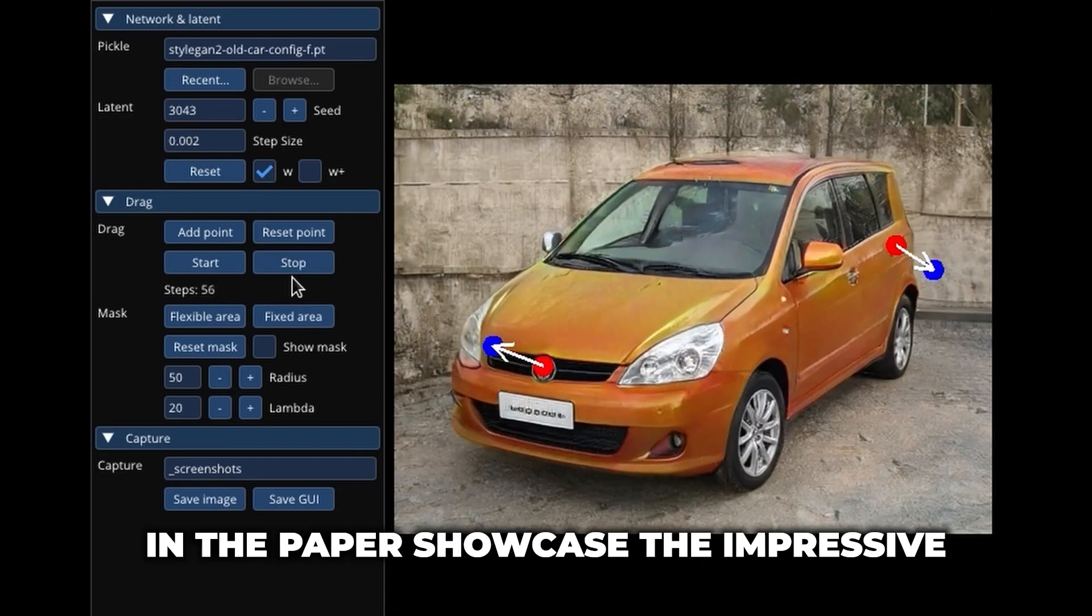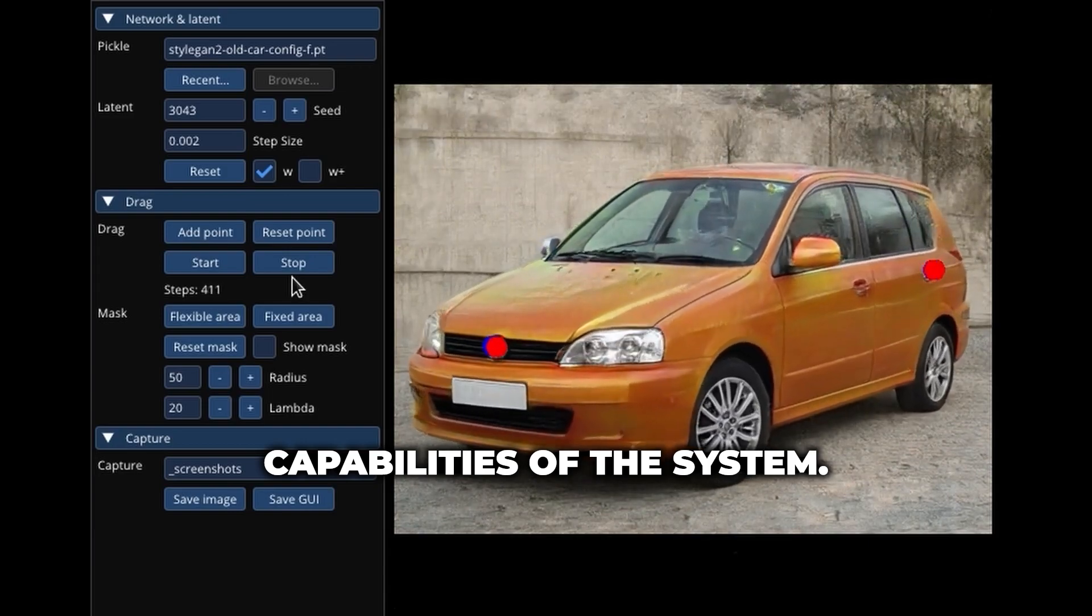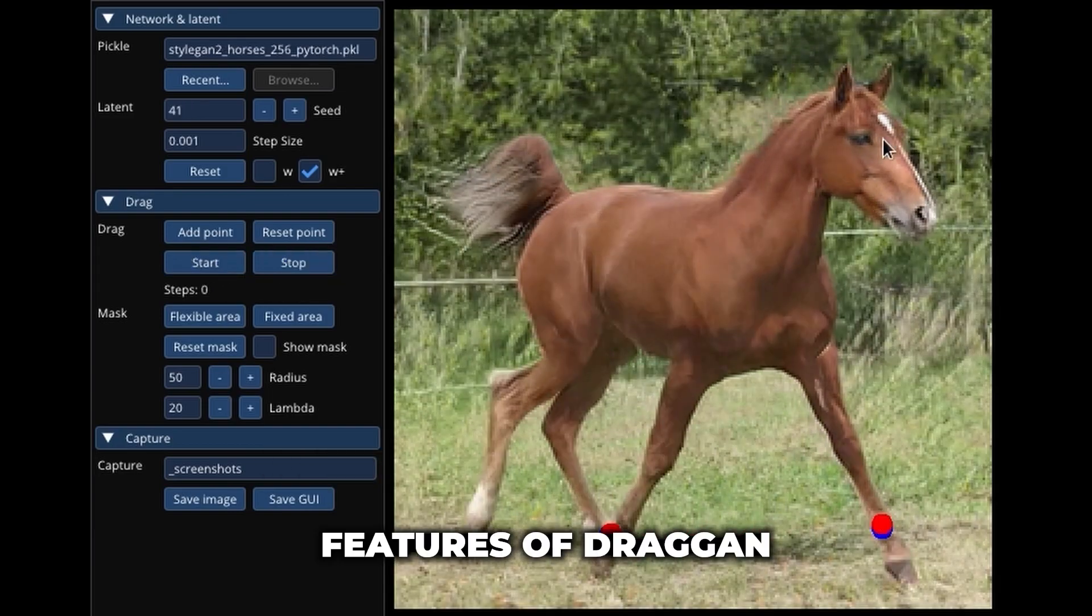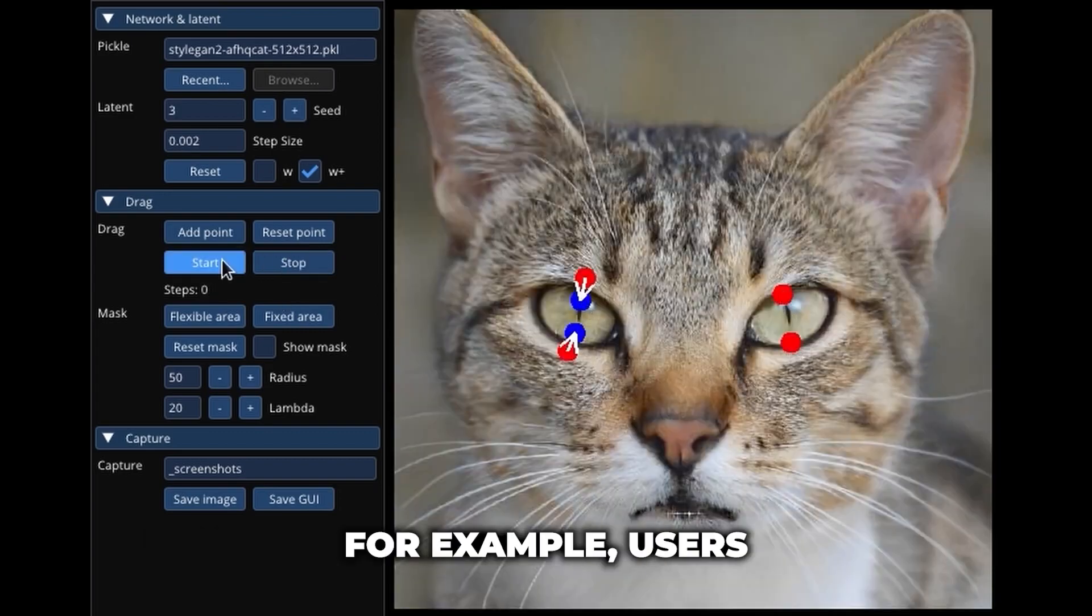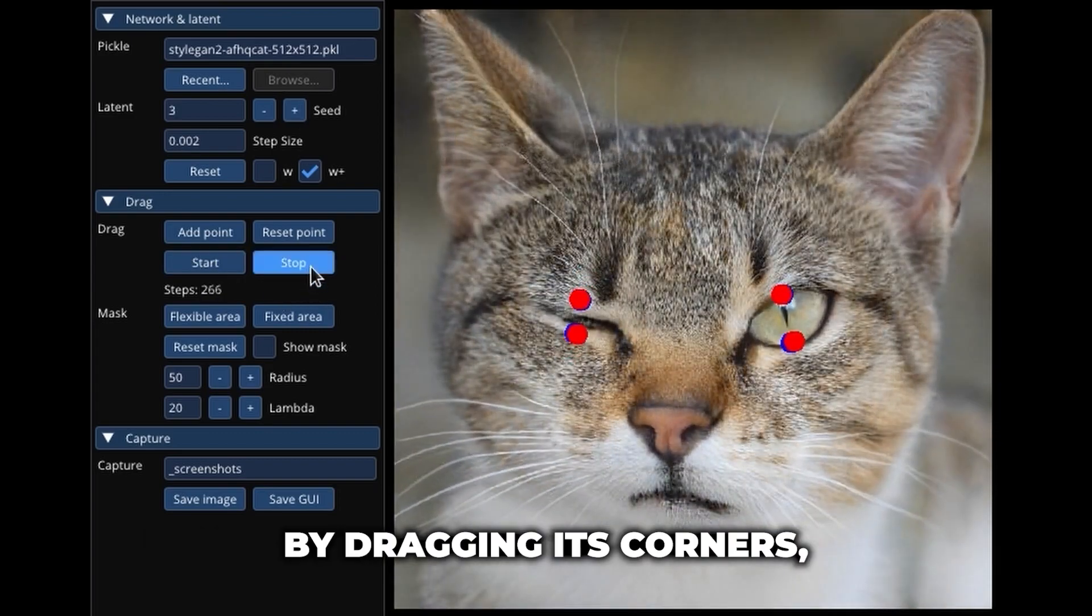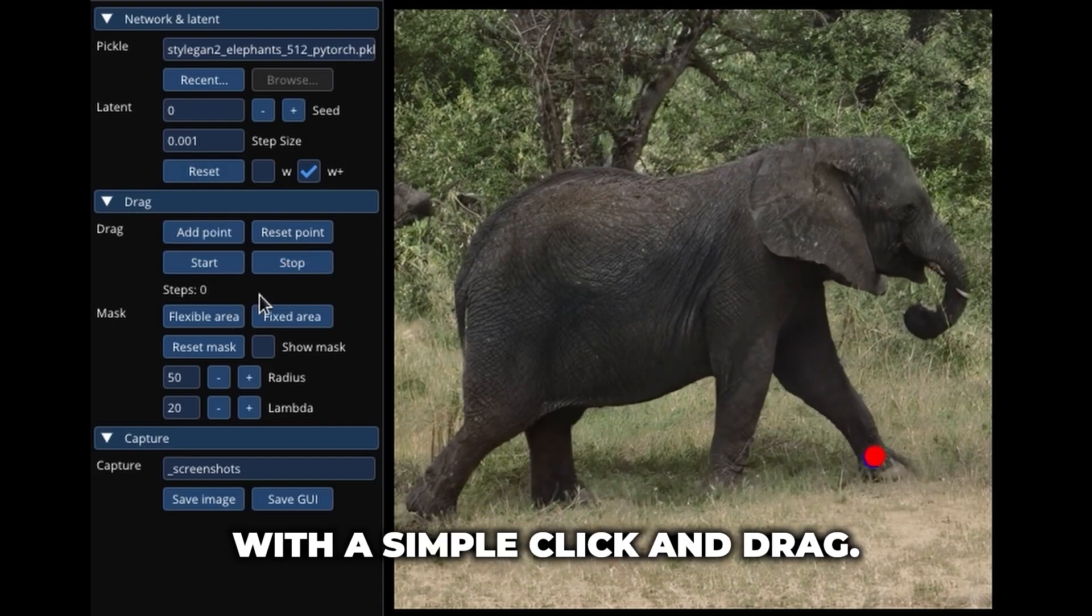The example provided in the paper showcased the impressive capabilities of the system. One of the key features of Dragan is its ability to change the dimensions of objects in an image. For example, users can easily resize a car by dragging its corners, altering its proportions with a simple click and drag.